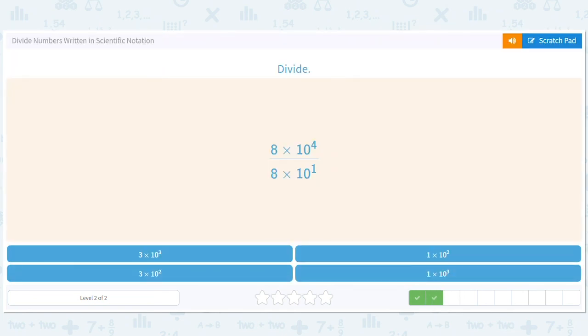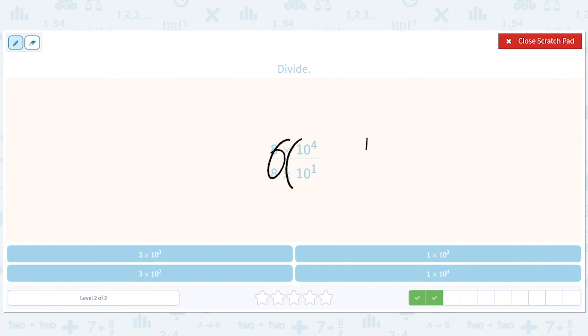And let's do one more just for fun. That's again 1. That's 10 to the 4 minus 1, which is 10 to the 3. So we have 1 times 10 to the 3.